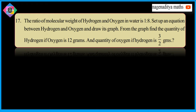Welcome to 9th class, 17th problem. The ratio of molecular weight of hydrogen and oxygen in water is 1 is to 8. Set up an equation between hydrogen and oxygen and draw its graph. From the graph, find the quantity of hydrogen if oxygen is 12 grams, and quantity of oxygen if hydrogen is 3/2 grams.